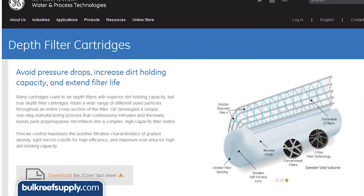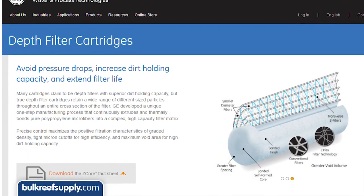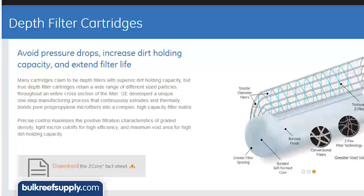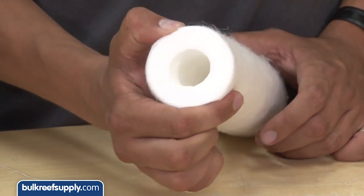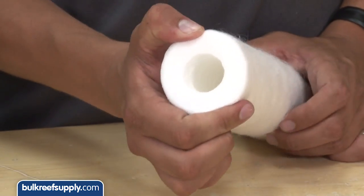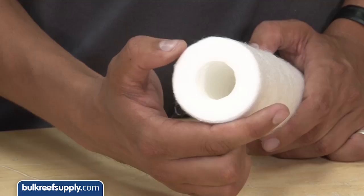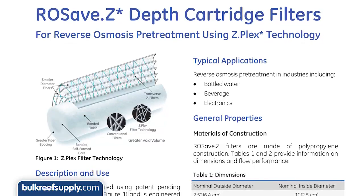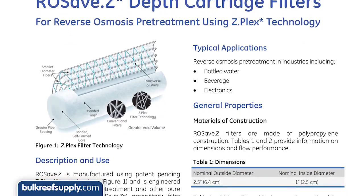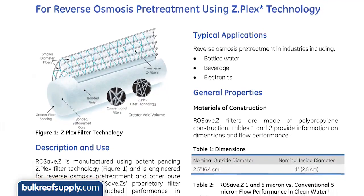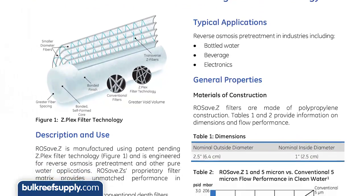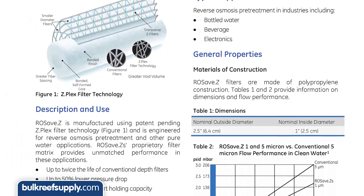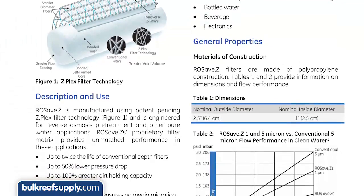GE produces a higher quality depth sediment filter with true graded density here in the USA, and the difference can be felt with your hand. With their PureTrix brand you can feel the filter is softer almost immediately. It has a woven feel to it and there is some flex to the filter when you squeeze it. GE also produces a premium filter called the ROSave.Z, which has a larger void volume and is specifically designed for use as a pre-treatment filter for reverse osmosis systems with optimal performance and filter longevity.